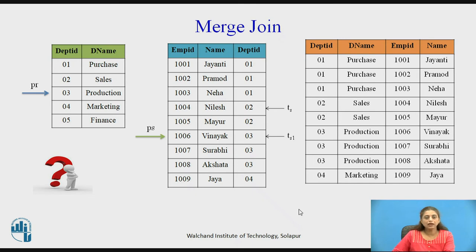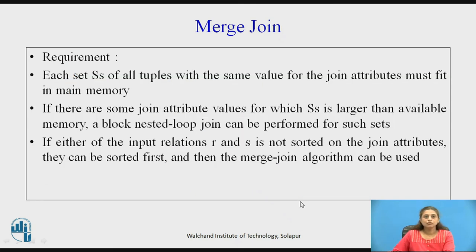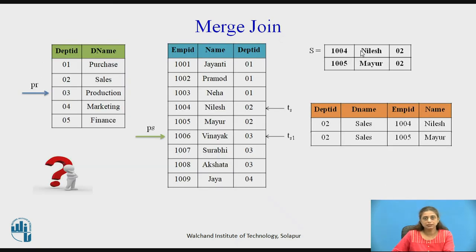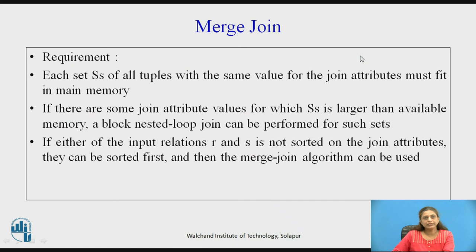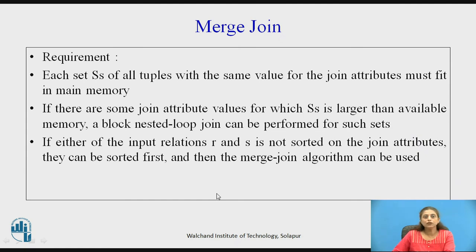I hope you have understood how merge join works. The key requirement is that each set SS of all tuples with the same value for the join attribute must fit in main memory. If it does not fit, we have to perform block nested loop join for the comparison. If either relation is not sorted, we must first sort it on the joining attribute before performing merge join.